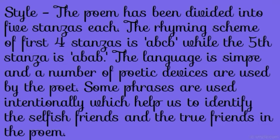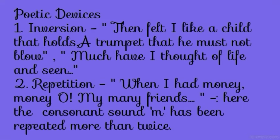Now let's see the style. The poem has been divided into five stanzas each. The rhyming scheme of the first four stanzas is ABCB while the fifth stanza is ABAB. The language is simple and a number of poetic devices are used by the poet. Some phrases are used intentionally which help us to identify the selfish friends and the true friends in the poem.